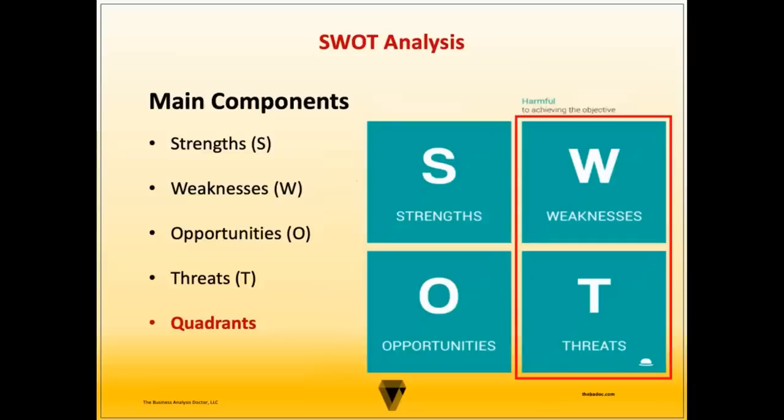Harmful quadrants are those in the SWOT that represent factors that may hinder the organization from achieving its goals and objectives, or represent items that pose as oppositions to the organization overall. Weaknesses and threats are considered to be harmful, and these should be minimized.